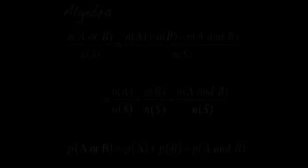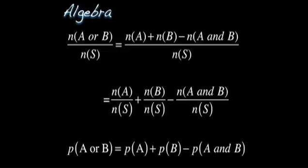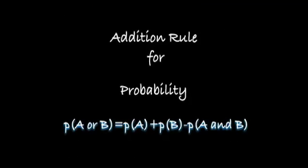What does this have to do with probability? From algebra, if we take the addition rule for counting and divide both sides by N of S, line 2 has N of S dividing each term — N of A, N of B, and N of A and B. N of A divided by N of S is defined to be the probability of A. N of B divided by N of S is the probability of B. N of A and B divided by N of S is the probability of A and B. This is known as the addition rule for probability: the probability of A or B is the probability of A plus the probability of B minus the probability of A and B.